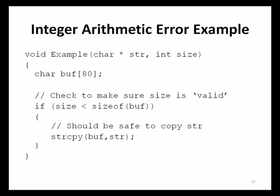Here is an example of an integer arithmetic error that can lead to a stack-based buffer overflow condition, adapted from the Microsoft Writing Secure Code 2nd edition book. The C language function takes two arguments: a character pointer 'str' (the data to copy) and an integer 'size' (the length of str). The code allocates a fixed buffer of 80 bytes and checks that the size of the source buffer is less than the destination buffer before calling strcpy — but there is a significant problem from a secure implementation perspective.